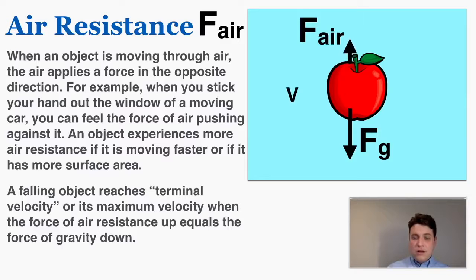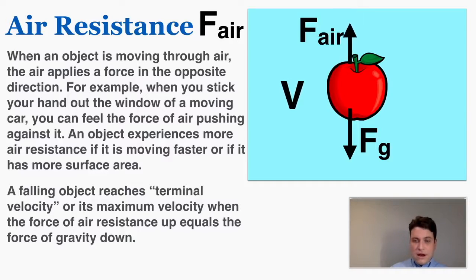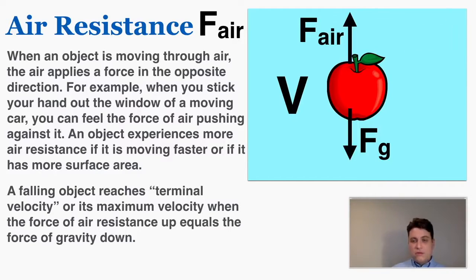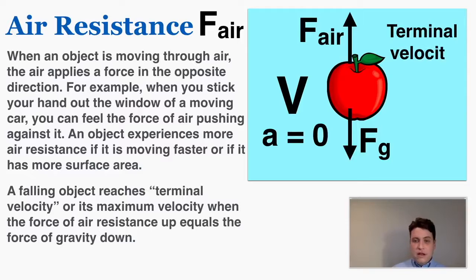While its velocity gets bigger, the force of air resistance in the other direction gets bigger, because the faster you move through the air, the more air pushes back on you. So here air is pushing back up on the object until it perfectly balances out the force of gravity, and at that moment the object stops accelerating and hits terminal velocity — the point where air resistance balances out the force of gravity to stop the object from accelerating.